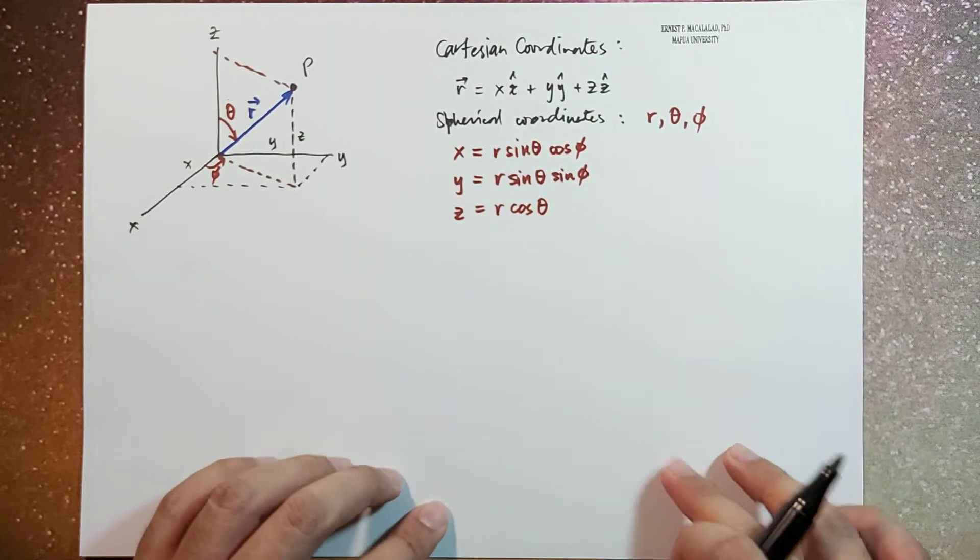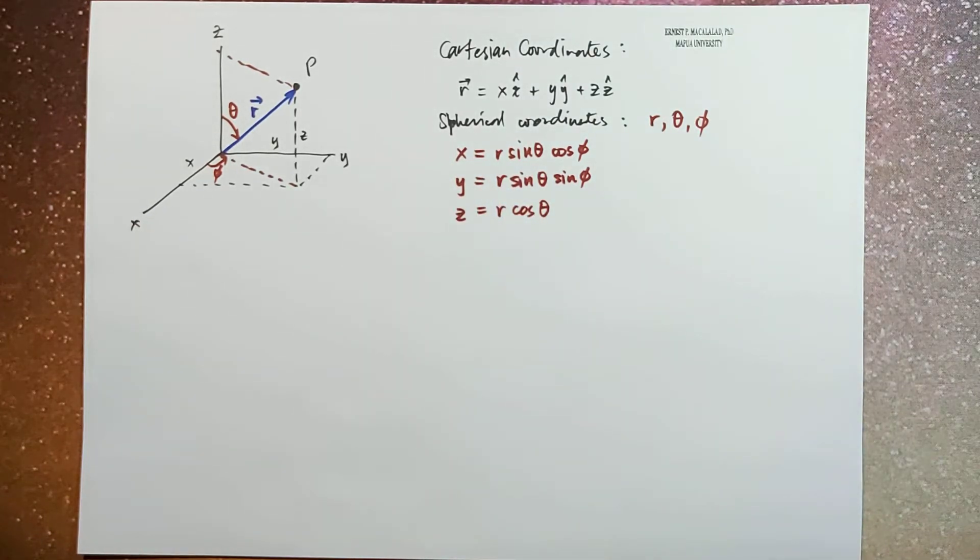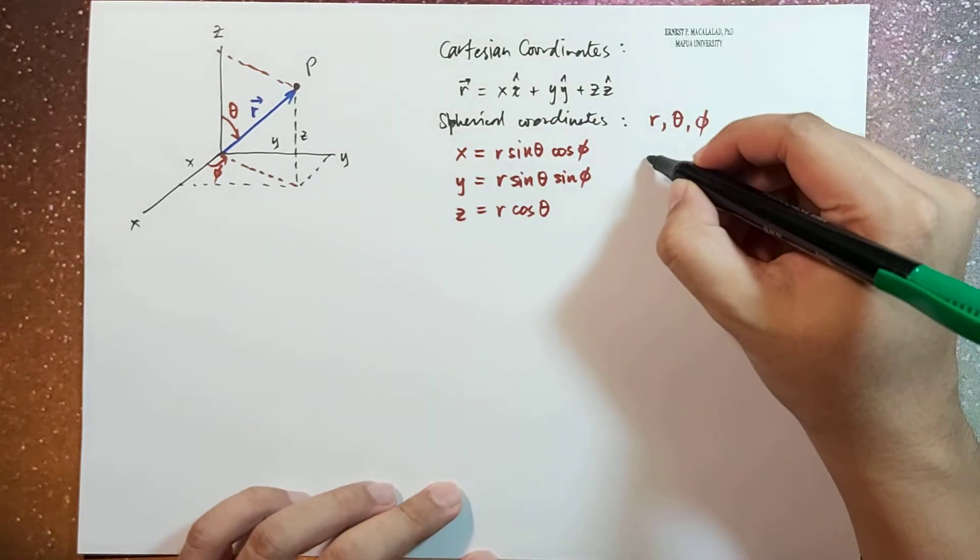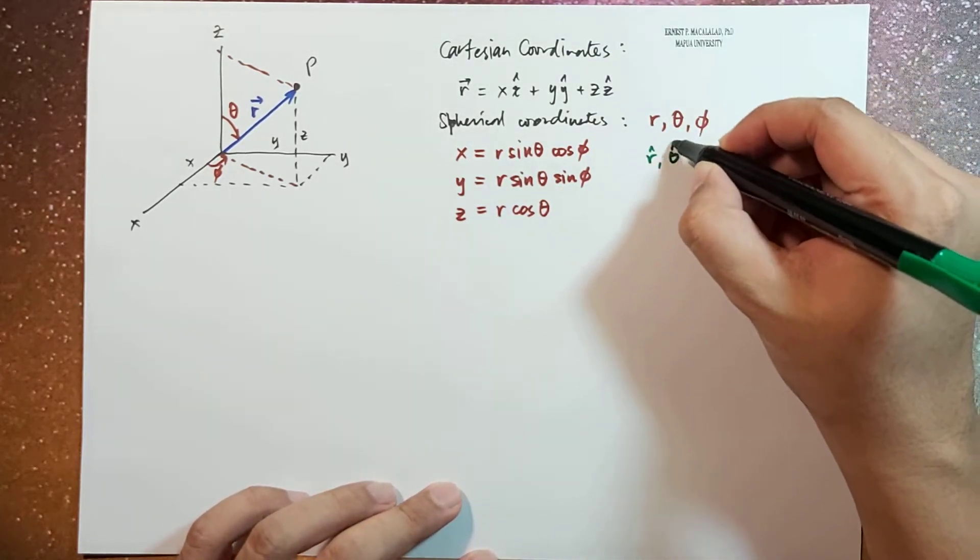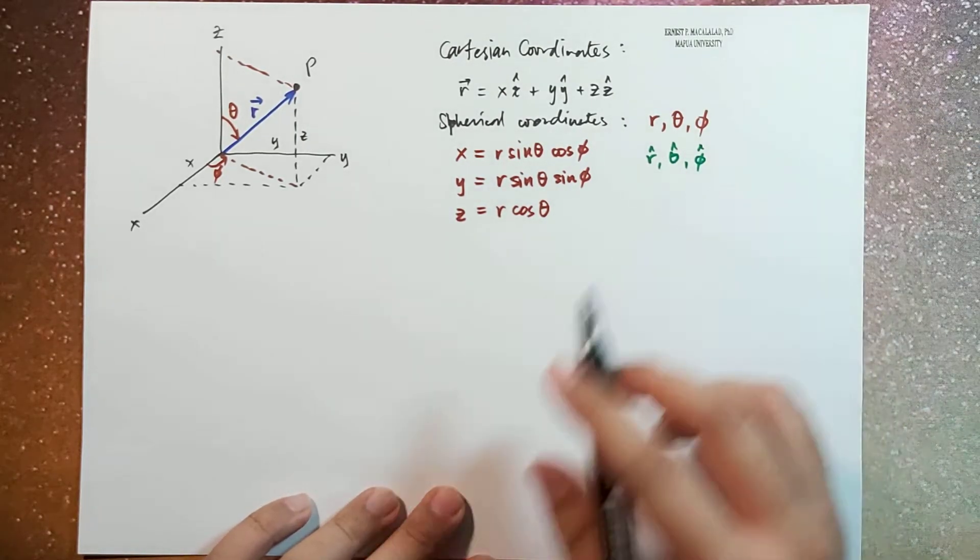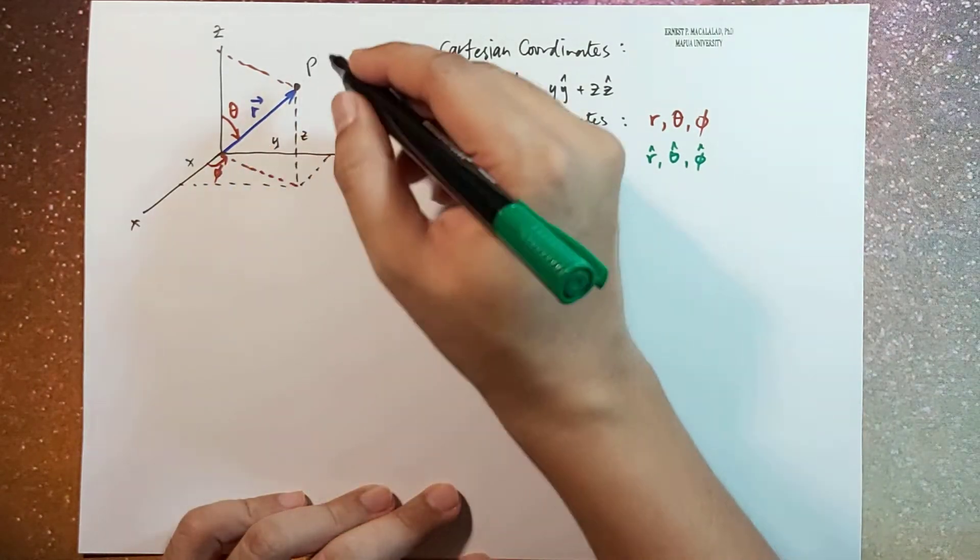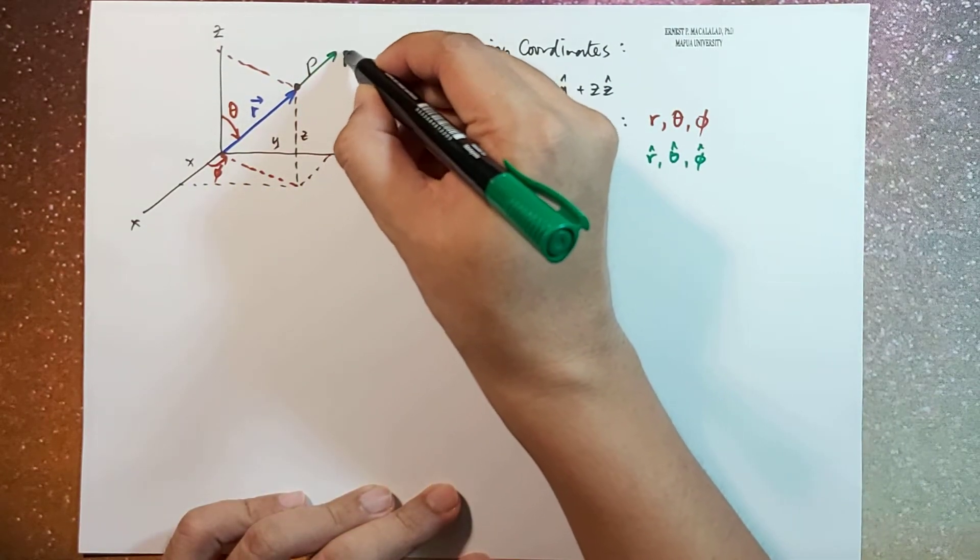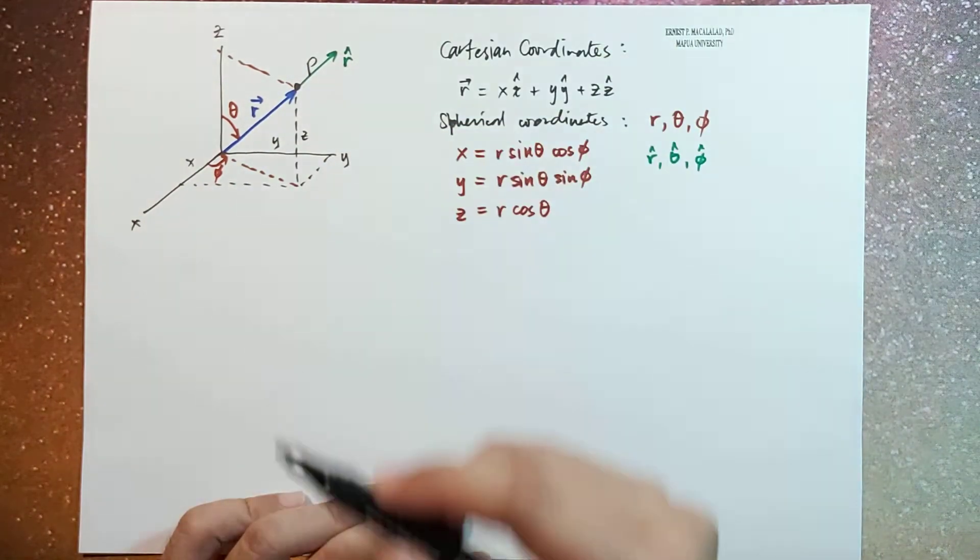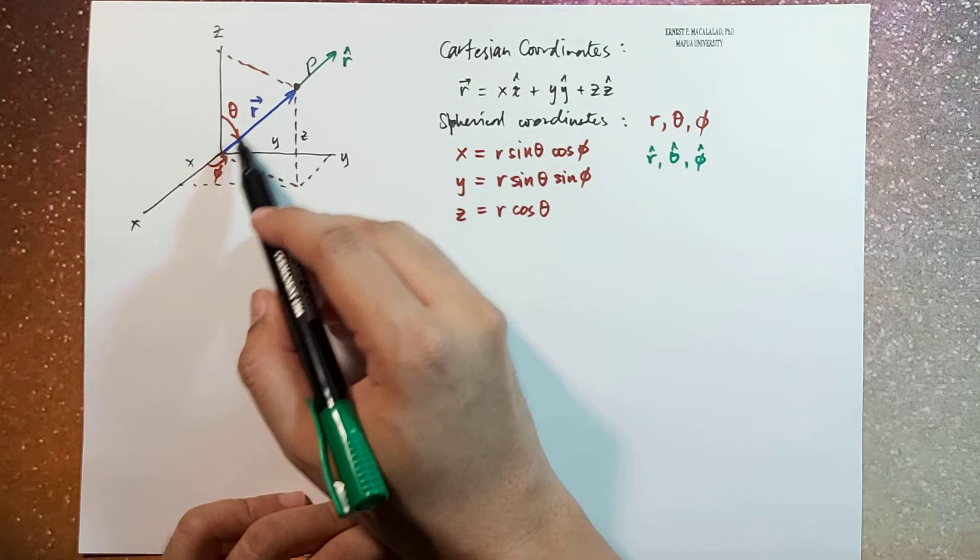Now, aside from our distances or components, we also define the unit vectors: r-hat, theta-hat, and phi-hat. This direction r would give us our r-hat. This vector is directed outward from the origin.